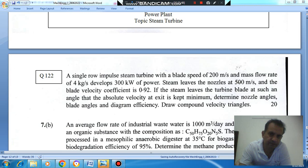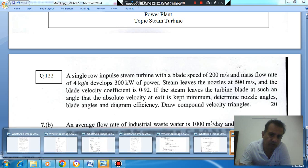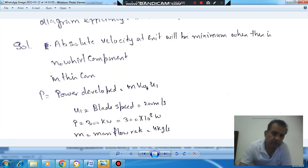So here it is given that the steam leaves the turbine blade at such an angle that the absolute velocity at the exit is kept minimum. For the absolute velocity to be minimum at the exit, there will be no whirl component. Then the absolute velocity will be minimum at the exit.